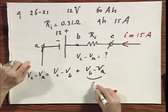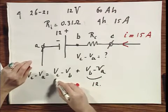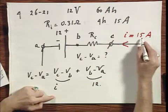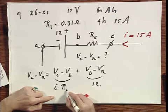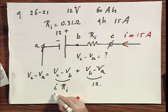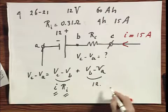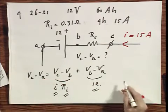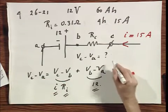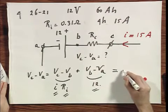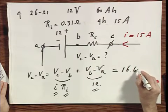But this is twelve volts. And this is that charging current of fifteen amperes times the internal resistance. You know I, you know Ri, you know 12, and so you find immediately that Vc minus Va happens to be sixteen point six five volts.